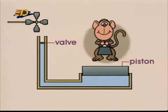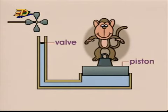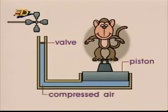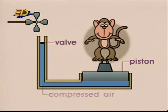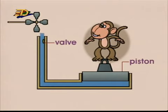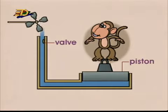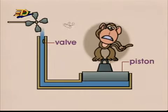First, an effort is applied to a piston. The piston compresses air in a pipe and the air pressure rises. When a valve is opened, air rushes out of the system. The pressure of the escaping air can do work, such as turning a fan.